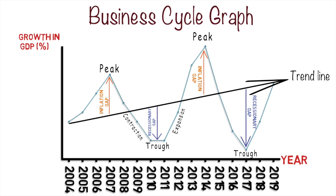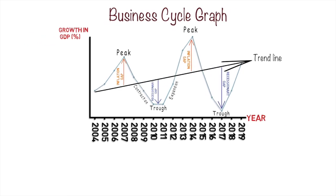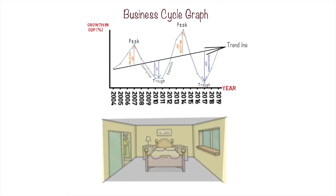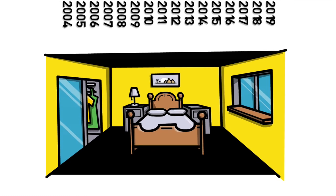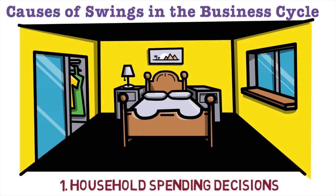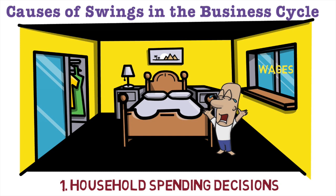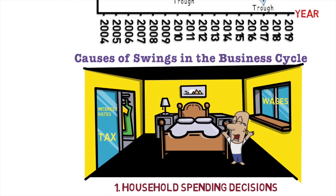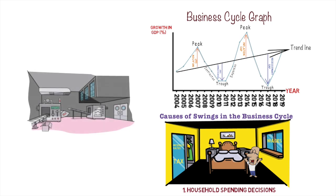In the second part of the video we concentrate on the causes of the business cycle — the causes of fluctuations and the policy implications. The first cause is household decision making: decisions on a microeconomic level by individual households. Factors include wage levels, which determine spending power; interest rates, where a rise in rates on a mortgage will reduce expenditure; and income taxes, which if increased can affect household spending decisions.